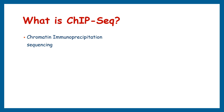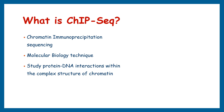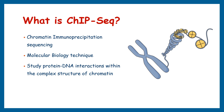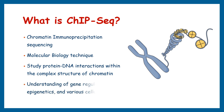ChIP sequencing, or chromatin immunoprecipitation sequencing, is a cutting-edge molecular biology technique used to investigate and analyze protein-DNA interactions within the complex structure of chromatin. Chromatin is a combination of DNA and proteins, including histones, which package the DNA into a compact form. This technique has significantly contributed to our understanding of gene regulation, epigenetics, and various cellular processes by providing a high-resolution map of where specific proteins are bound to DNA in the genome.